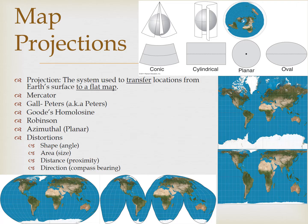There are four types of distortions, and each of these types have synonyms you'll want to be familiar with. They are distortions of shape or angle, distortions of area or size, distortions of distance or proximity, and finally distortions of direction, which is sometimes referred to as compass bearing. We're going to be examining these in greater detail in class.